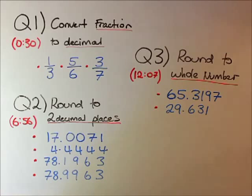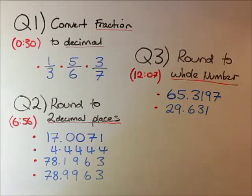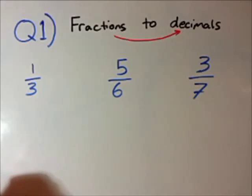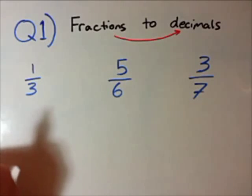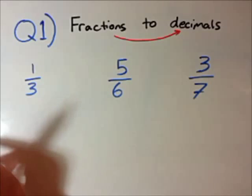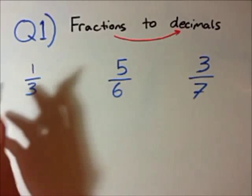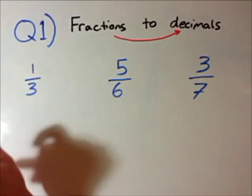Hi everyone, John here for this video. This video looks at converting fractions to decimals and then rounding decimals to decimal places and whole numbers. I have three questions here — feel free to skip to the question you're interested in, which is indicated in red. Question 1 is turning fractions into decimals. These will be what we call recurring decimals, which I'll explain. We learned previously how to turn fractions into decimals, but I'll recap on that.